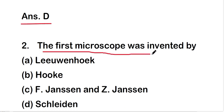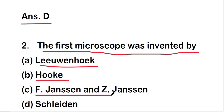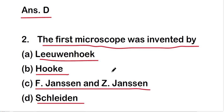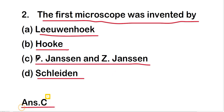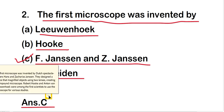The next question: the first microscope was invented by Leeuwenhoek, Robert Hooke, F. Janssen and Z. Janssen, or Slayden? The right answer is option C — Janssen and Janssen. The first microscope was invented by Dutch spectacle makers Hans and Zacharias Janssen, who designed a device that magnified objects using two lenses, creating a compound microscope. Robert Hooke and Anton van Leeuwenhoek were among the first scientists to use the microscope for studies of live cells.